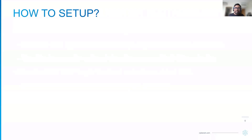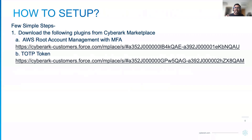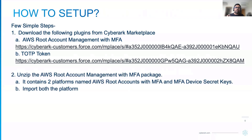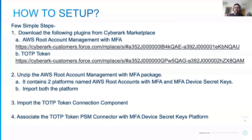To set up, there are a few simple steps to perform. The first step is to go to the CyberArk marketplace and download two different plugins: the first one is the AWS root account management with MFA, and the second one is the TOTP token. Once you download and unzip the AWS root account management with MFA plugin, you will see two different platforms: AWS root account with MFA and MFA device secret key. Import both platforms into CyberArk. As a third step, import the TOTP token connection component. The fourth step is to associate this TOTP token connection component with the MFA device secret key platform.